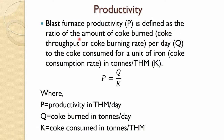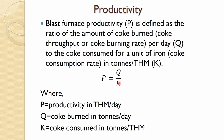In this lecture we would be discussing about the blast furnace productivity. Glass furnace productivity is defined as the ratio of the amount of coke throughput, or coke burning rate per day, to the coke consumed for a unit of iron — that is, coke consumption rate in tons per ton of hot metal. So, productivity P equals Q divided by K, where K is the coke consumed per unit of iron.